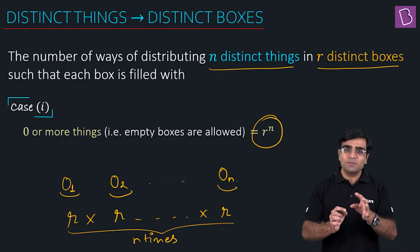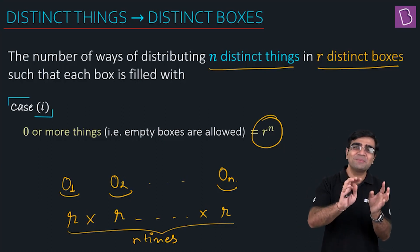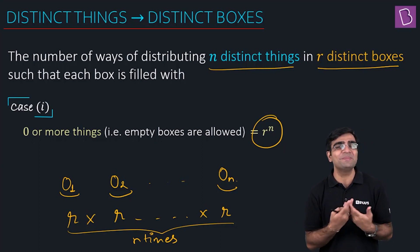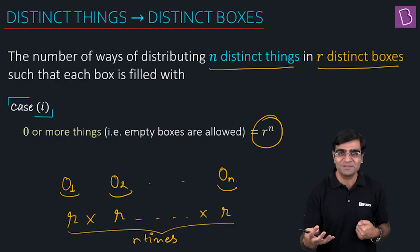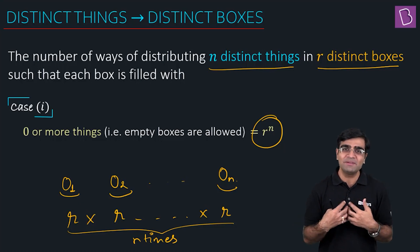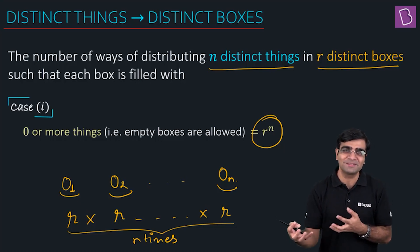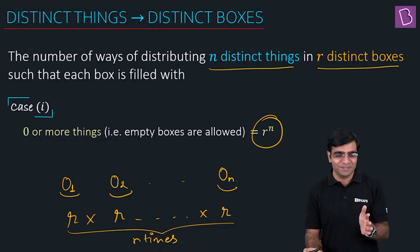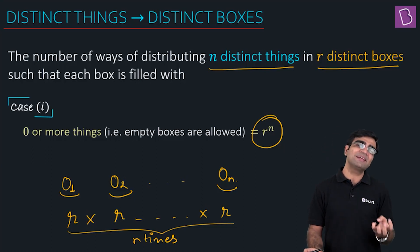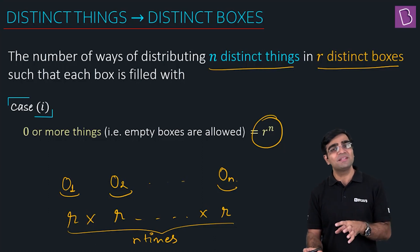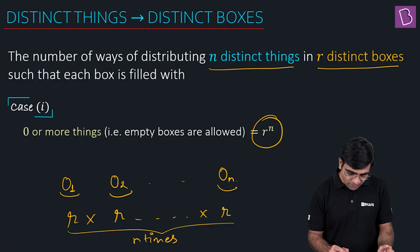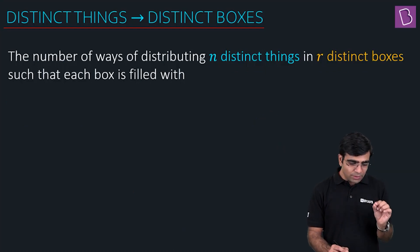Please remember: we distribute objects into boxes, not boxes into objects. So the thought process must be based on the objects. Every object makes a choice — each object has r options — and we have n objects, so in total it is r to the power n.